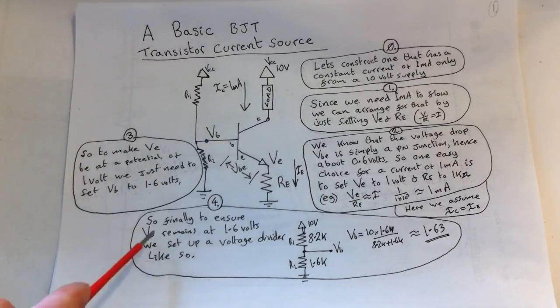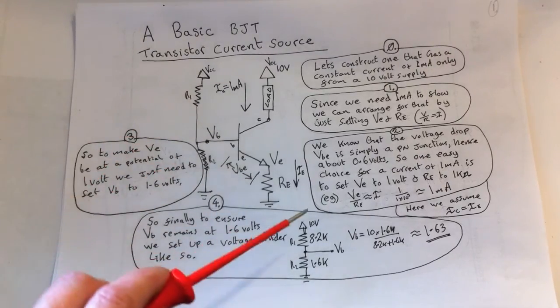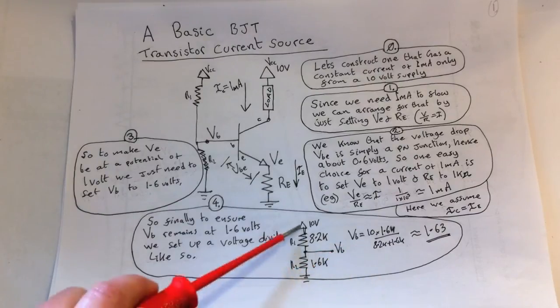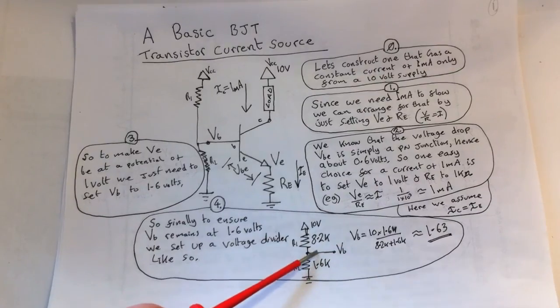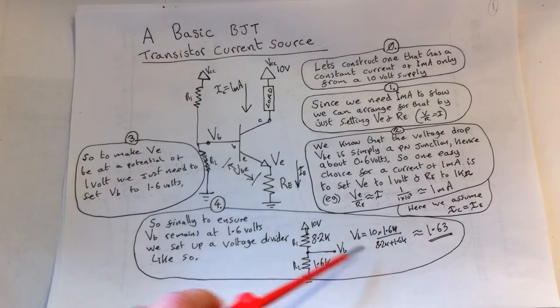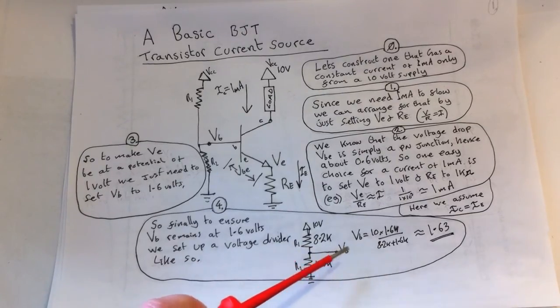To ensure the base voltage remains at 1.6 volts, we set up a voltage divider like so. These two resistors here set up a simple voltage divider, and we can work out the base voltage by simply working out the ratio. The actual voltage is 10 volts times 1.6k divided by the sum of both resistors. That's a simple voltage divider formula.